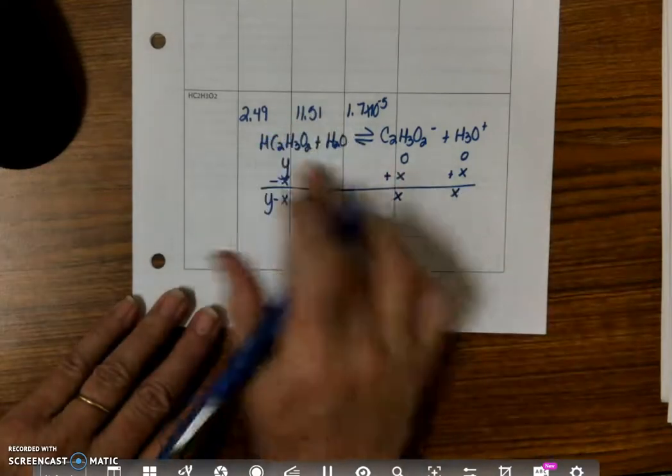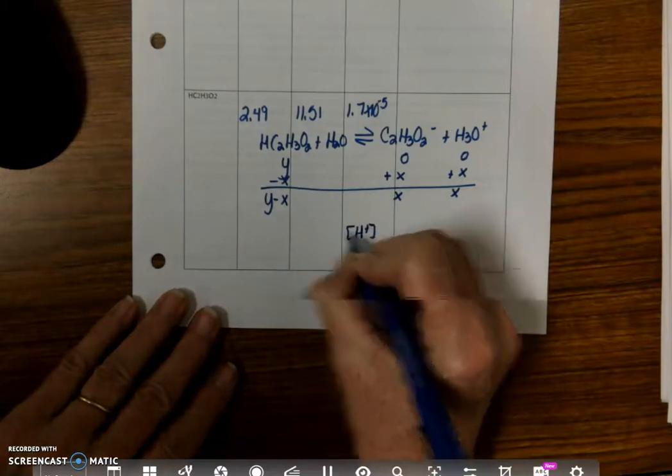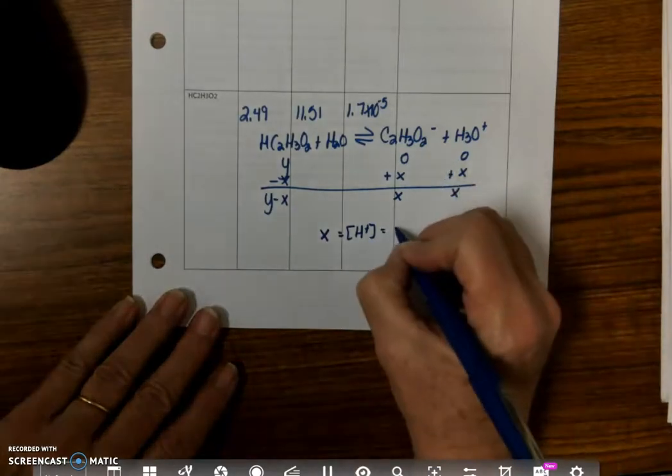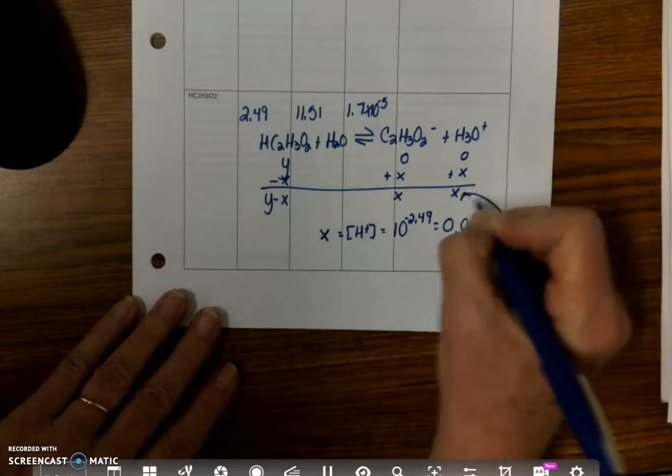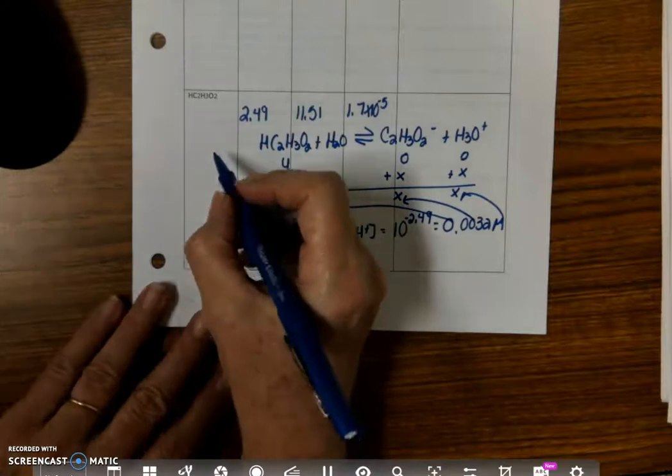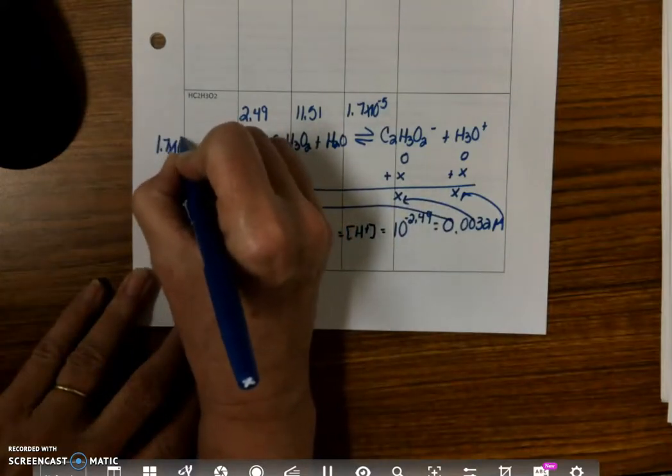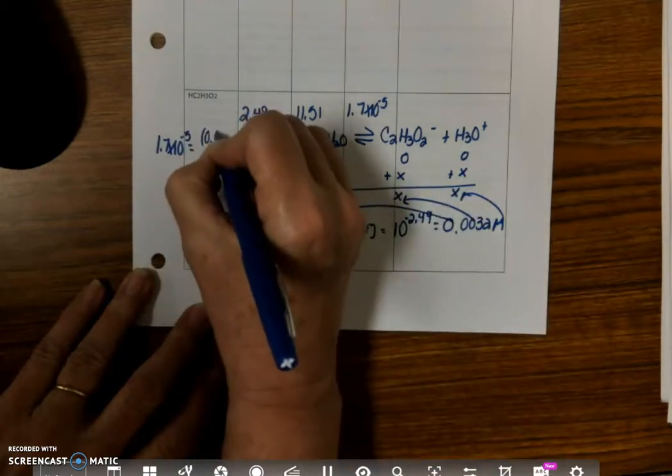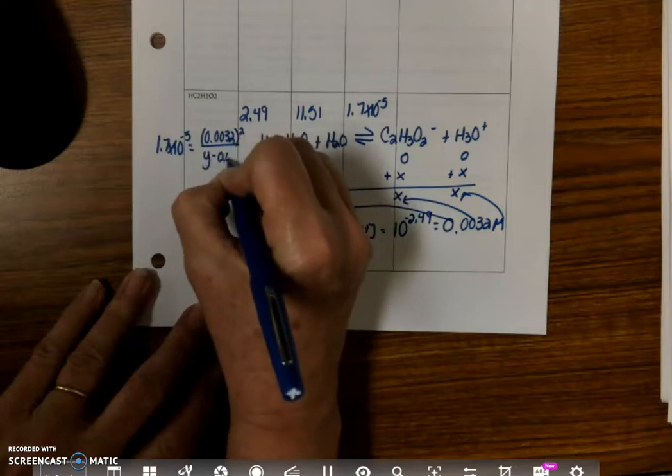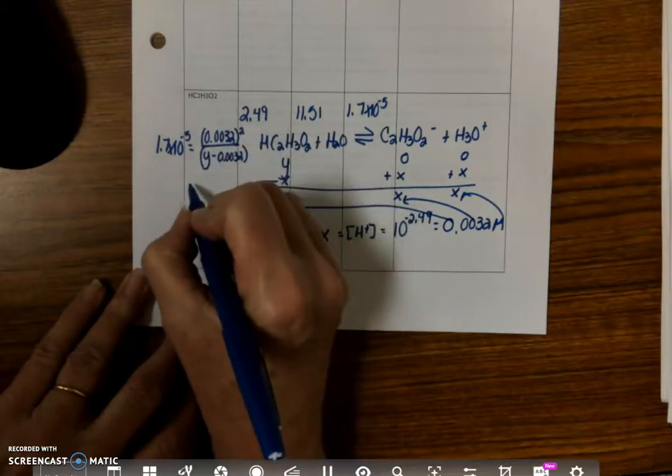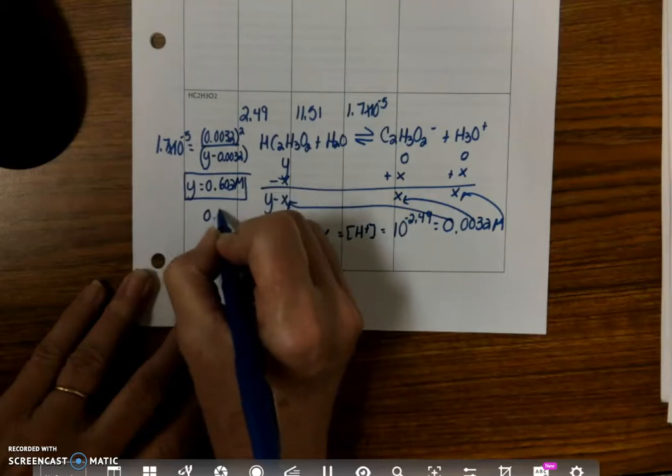Now, the good thing is I know what X is because I know what the hydrogen ion concentration is, or at least I can get it from this. So if I take hydrogen ion concentration, I'm going to call this X, or hydrogen ion concentration, is equal to 10 to the minus 2.49, which is 0.0032 molar. So I plug that in there, plug that in there, and plug that in there. And then I'm going to set everything equal to Ka and solve for Y. So I get my Ka, 1.7 times 10 to the minus 5 is equal to 0.0032 squared divided by Y minus 0.0032. When I do that, Y is equal to 0.602 molar. Actually, it really should be 0.60 molar.